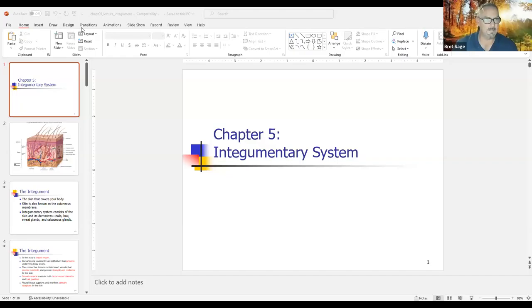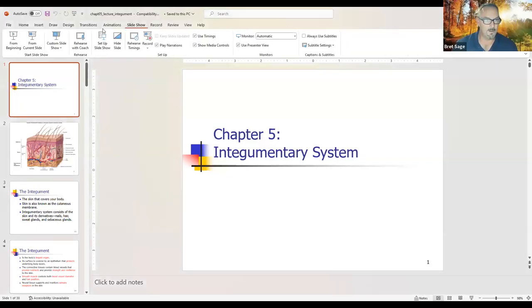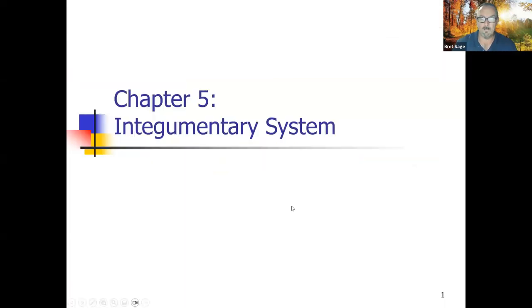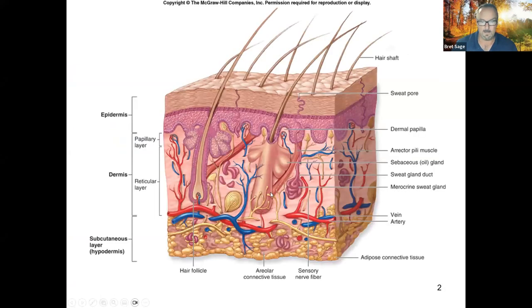That's it for Chapter 4. Now moving to Chapter 5: the integumentary system — our skin. This chapter includes the first essay. This image shows a diagram of the different parts of the skin — you can see hairs, blood vessels, muscles that cause hairs to stand up, nerve tissue, adipose tissue, and blood vessels below.